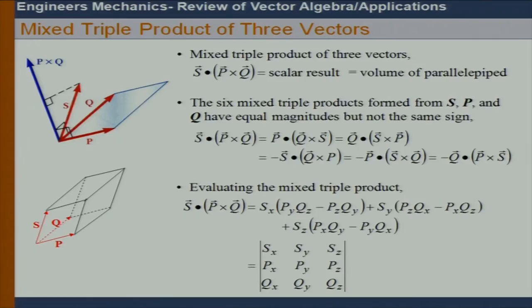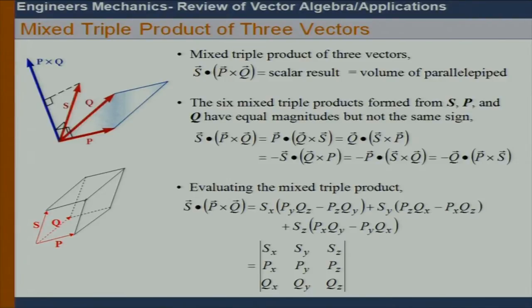Mixed triple product involves three vectors P, Q, and S. The mixed triple product is S dot (P cross Q), which yields a scalar quantity representing the volume of a parallelepiped. P cross Q gives the area (magnitude), and S dot (P cross Q) gives the height times that area, producing the volume.